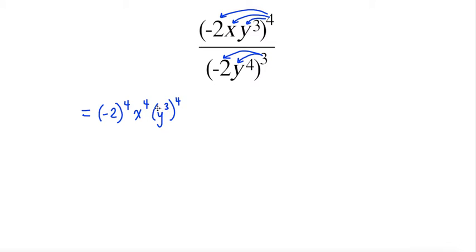Note that I put this in a bracket to show that I wanted to make this whole exponent to the exponent of 4. So then it becomes a power of a power. I'm going to do the same thing with my denominator. I'm going to have negative 2 to the exponent of 3 and then y to the exponent of 4 to the exponent of 3.